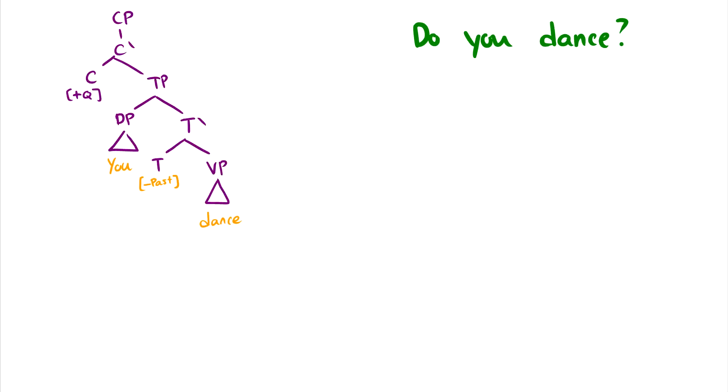So let's show you how this works. I want to make the question, do you dance. So in our surface structure, we have you, we have minus past, dance. And if we take the inflectional morphology and we move it down to dance like we can, and then we want to make a question, we have nothing left in T to move up. So what do we do?